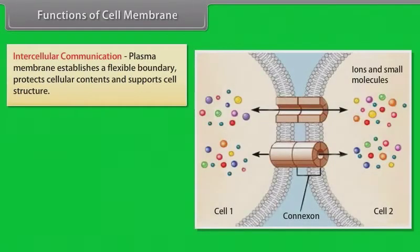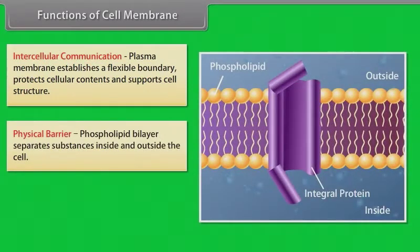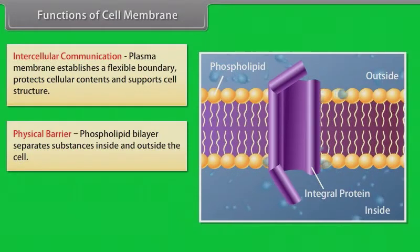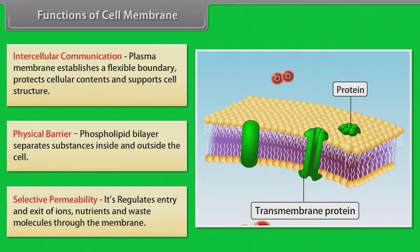Intercellular communication: plasma membrane establishes a flexible boundary, protects cellular contents and supports cell structure. Physical barrier: the phospholipid bilayer separates substances inside and outside the cell. Selective permeability: it regulates entry and exit of ions, nutrients and waste molecules through the membrane.